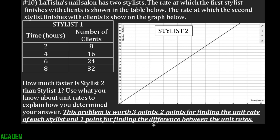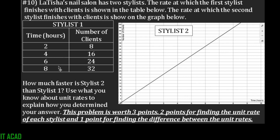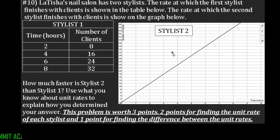This problem will be worth three points, so you need to be able to show your work. Two points are for finding the unit rate of each stylist — we need to find the unit rate of stylist one and stylist two. And then finding the difference between the unit rates, meaning how much faster is stylist two. So we're supposed to know that stylist two is faster than stylist one.